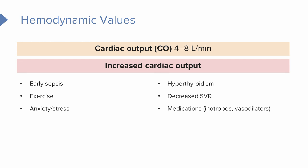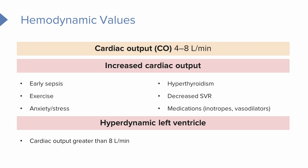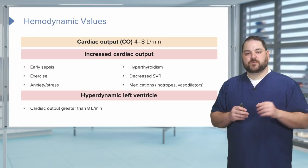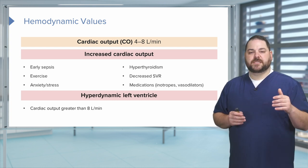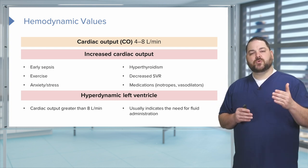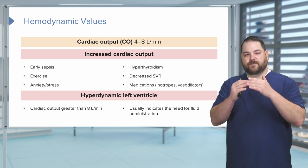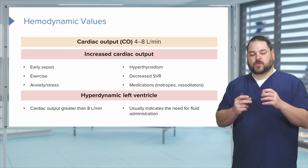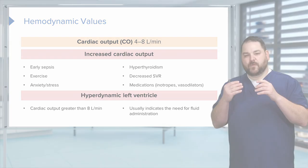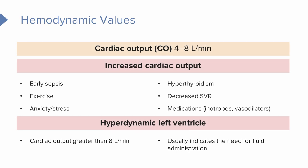Later in this series we'll dive into those medications — how they increase contractility and decrease afterload. Keep in mind that a hyperdynamic left ventricle is a cardiac output greater than 8 liters per minute. We see this with very healthy athletes and in the early stages of sepsis. This is usually an indication the patient needs fluid administration — basically any fluid going into that left ventricle is being pumped out as fast as possible. Adding fluid can actually slow it down so it's not contracting with everything it has.